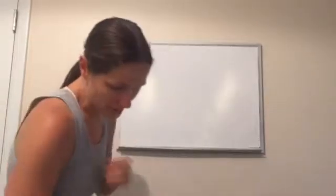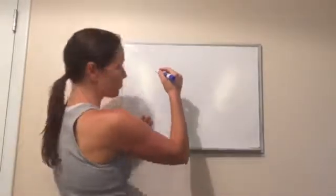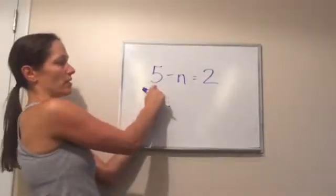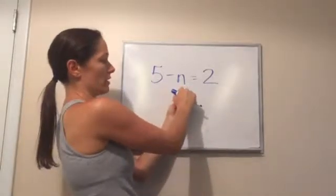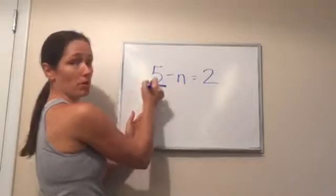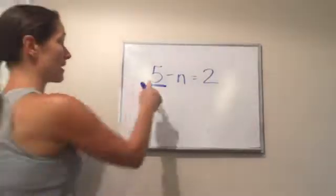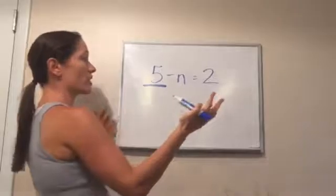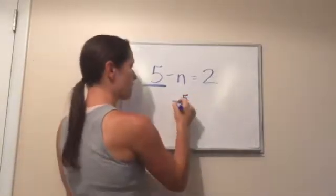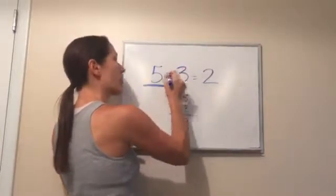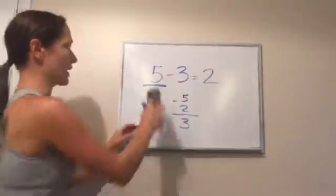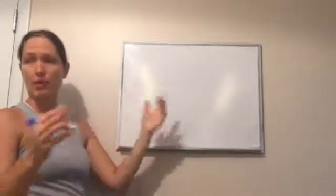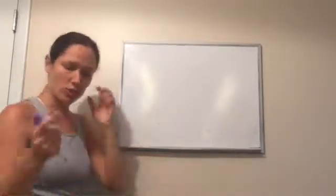Now let's try one with a missing subtrahend: 5 minus N equals 2. Look at the biggest number — 5 is my biggest. Am I going to need a bigger or smaller number than 5 to get the answer 2? Smaller. So to get a smaller number, we subtract: 5 minus 2 is 3. Let's put that back in: 5 minus 3 equals 2 — we've gotten it right. The rule for a missing subtrahend is: you subtract to get the answer.